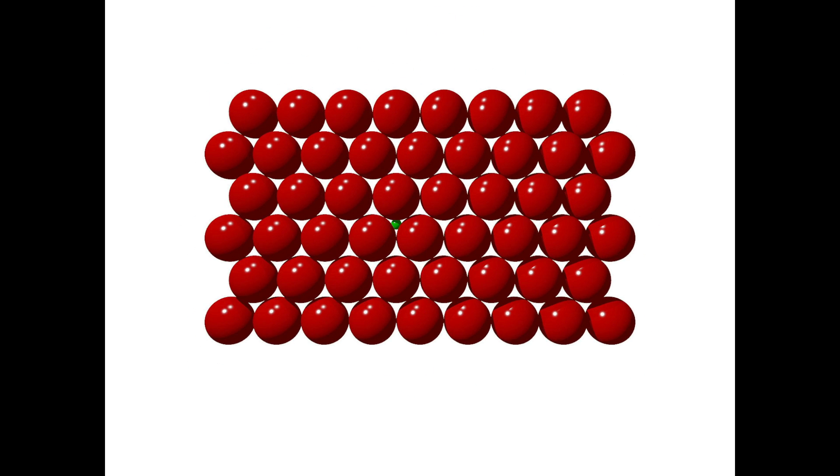The triangular holes created by a single layer of close packed spheres are the smallest holes in a three-dimensional close packed structure. Now let's look at the tetrahedral and octahedral shaped voids created by placing a second layer.